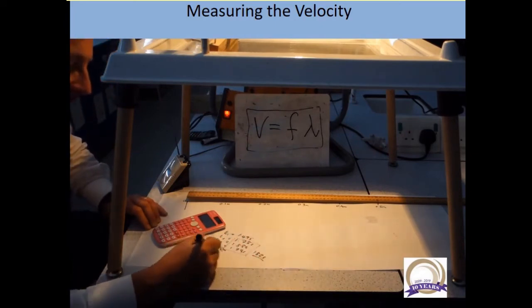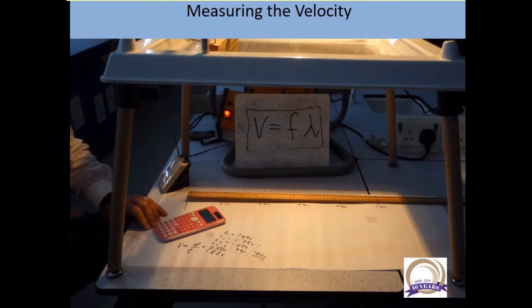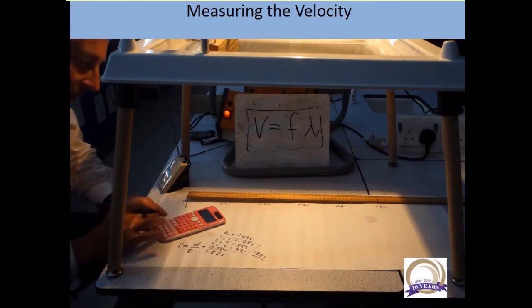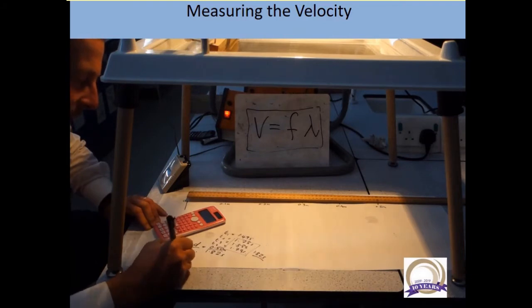So we've got a distance of 0.5 meters divided by 1.82 seconds. So distance divided by time: 0.50 divided by 1.82 is velocity of 0.27...